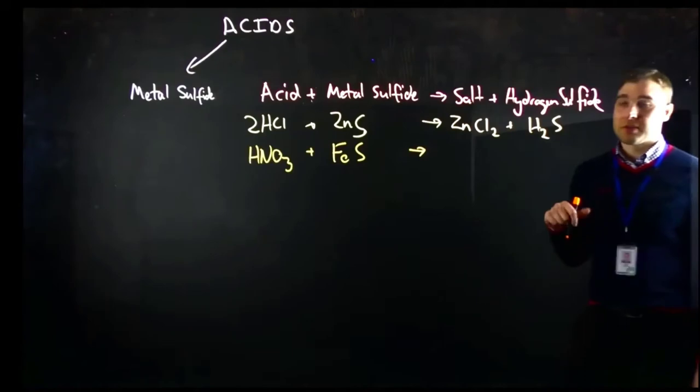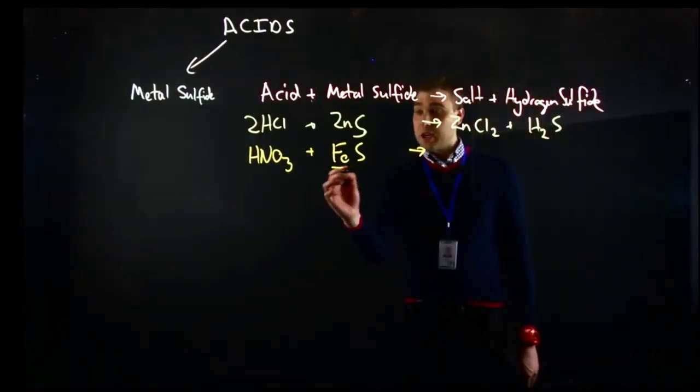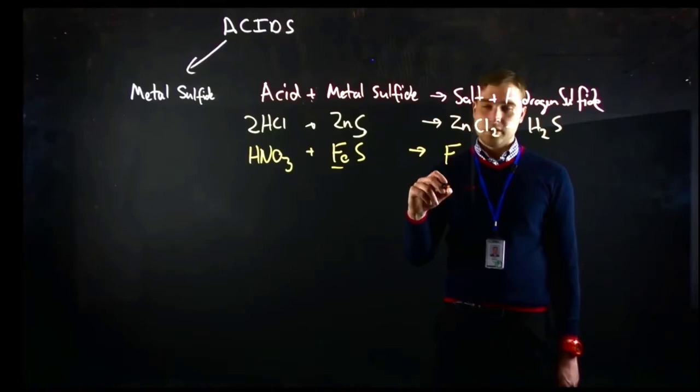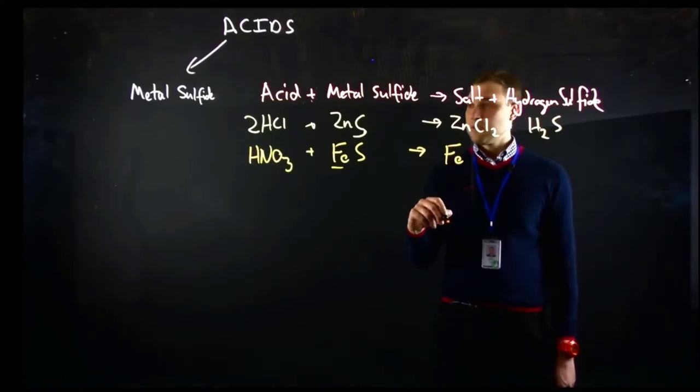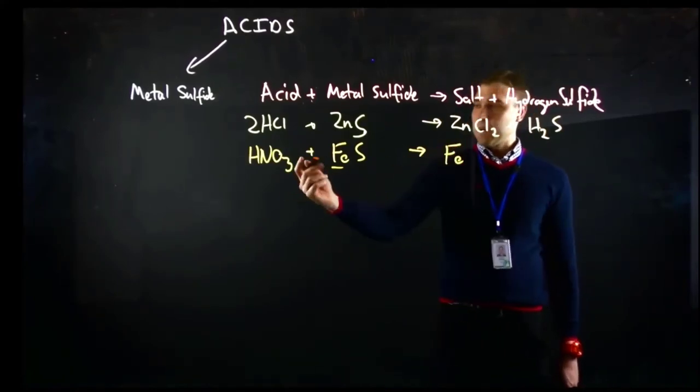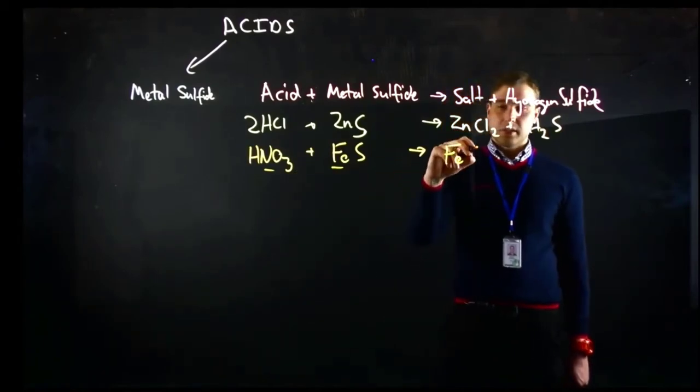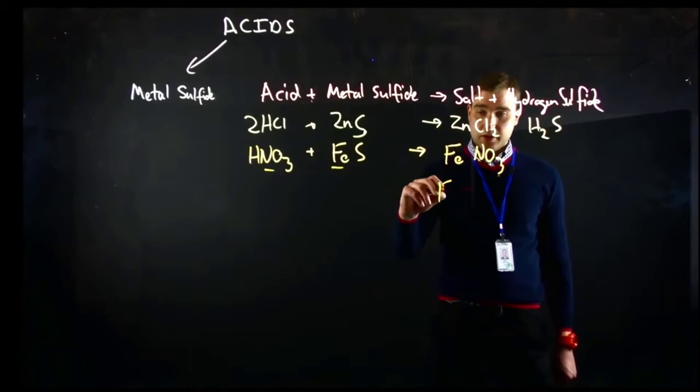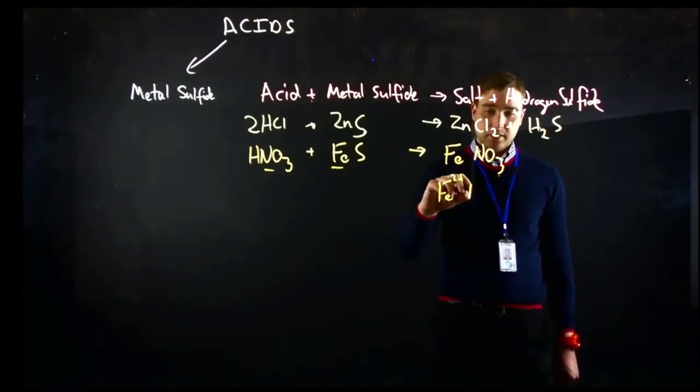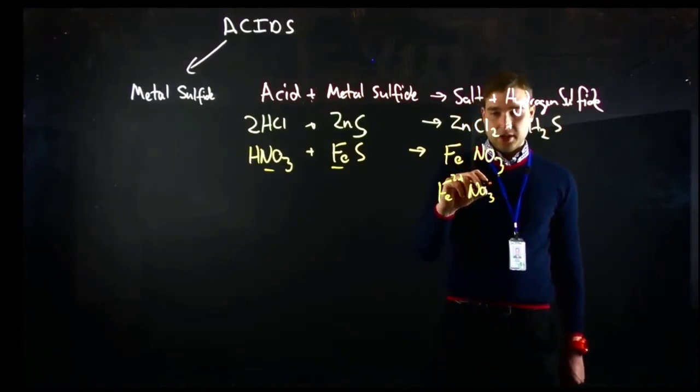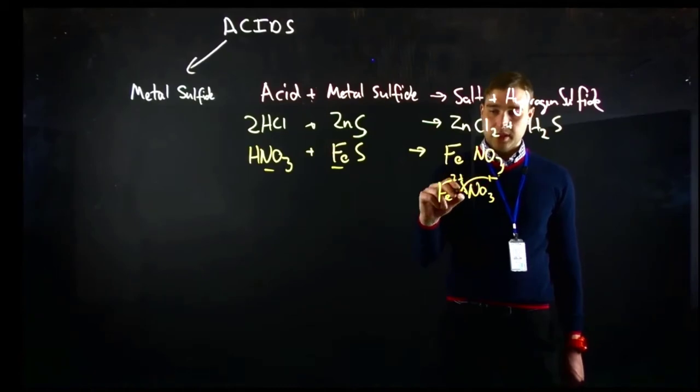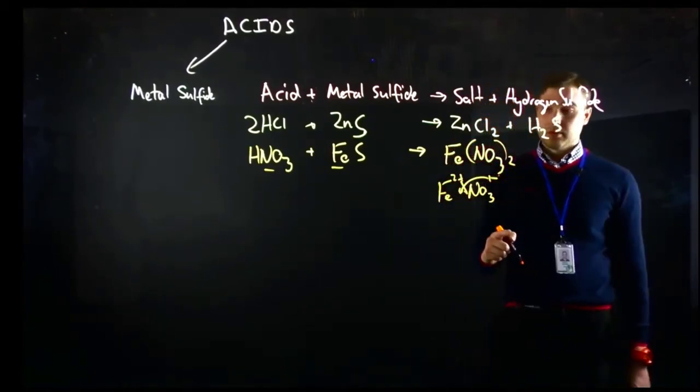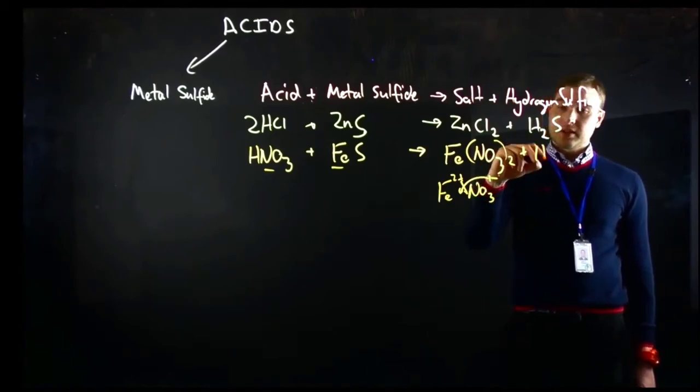Now we need to figure out what the name of the salt is going to be. The positive iron from the acid is the ferrous iron, so iron-2. Our negative part from the acid is going to be the nitrate ion. We've got a problem because ferrous iron has a charge of 2+, nitrate ion has a charge of 1-, so again we need to crisscross. We get Fe(NO₃)₂, so 2 nitrates, plus hydrogen sulphide.